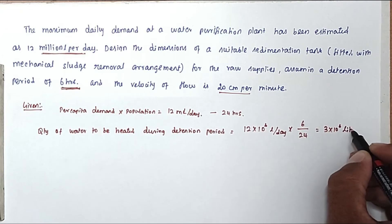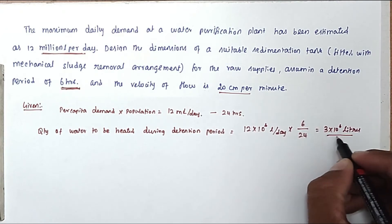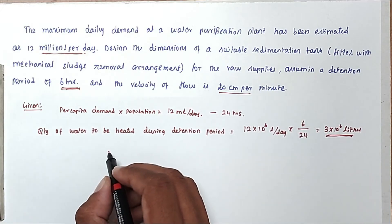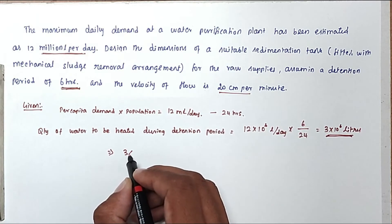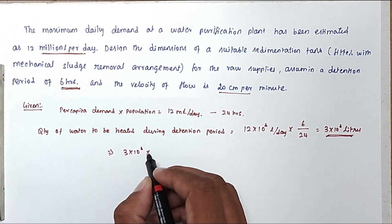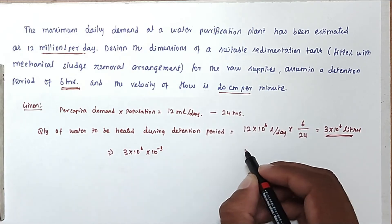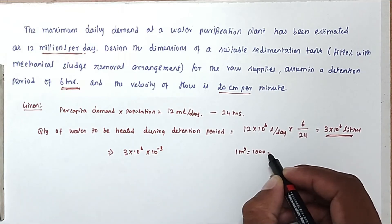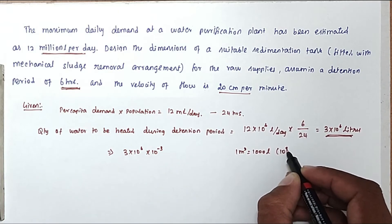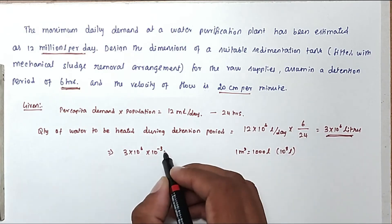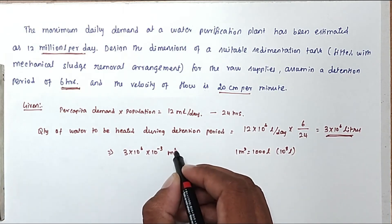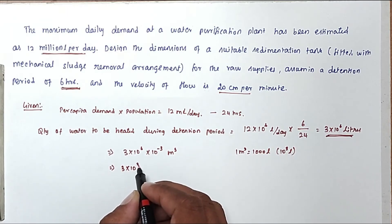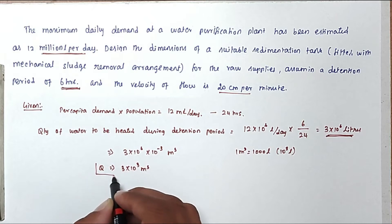The quantity of water treated is 3 × 10⁶ liters. Converting to cubic meters: 3 × 10⁶ liters × 10⁻³ m³/liter, because 1 m³ equals 1000 liters. So we get 3 × 10³ m³, which is 3000 m³. This is the main quantity of water we have to treat.